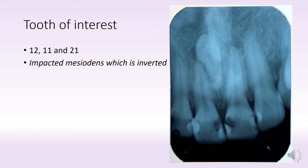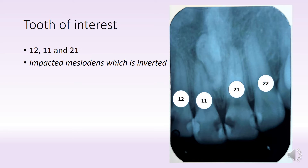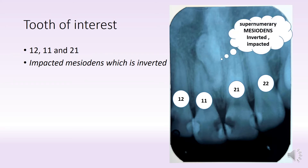The teeth of interest, or the area, is actually the maxillary anterior region. And what do we have here? We have the 1-2, 1-1, 2-1 and 2-2, and we also have an impacted tooth in the midline.